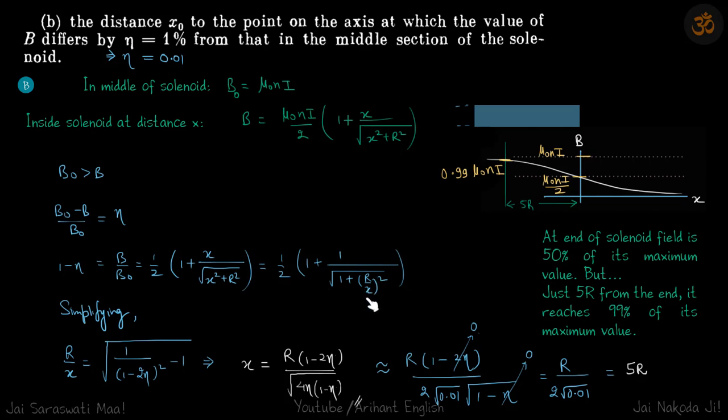You can write it in the form of r by x. Take these terms, square and do the inverse and subtract 1. Take the root, you will get r by x equals root of 1 divided by 1 minus 2 eta whole square minus 1. You get plus minus but obviously we reject the minus value. Simplifying, x equals r times 1 minus 2 eta by 4 eta times 1 minus eta.